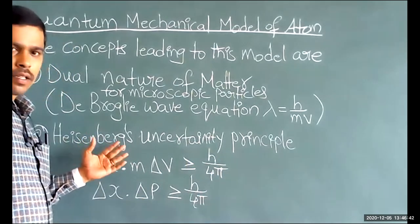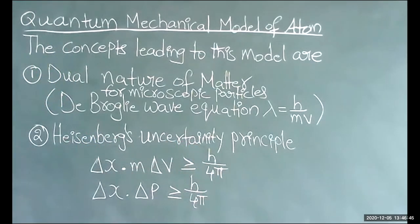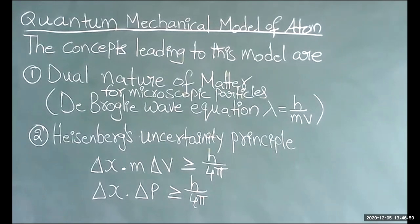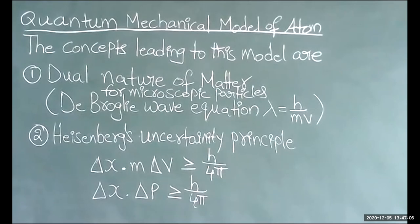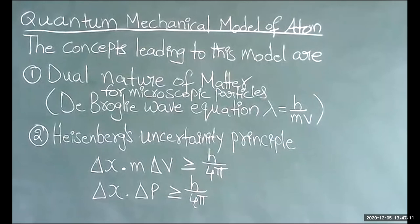Can you say what is going to be uncertain in the atom? The path of electron is going to be uncertain. The position of electron is going to be uncertain. The velocity of electron is going to be uncertain. So three things are going to be uncertain.